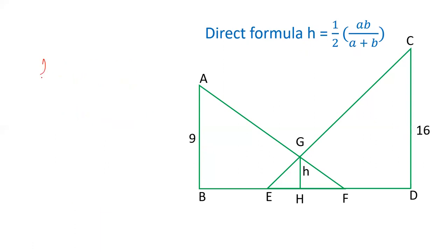One more example. H needs to be found with the same conditions: BE, EH, and FD equal, lines parallel. H value is one-half A times B upon A plus B, the formula we have written. One-half, where A is 9 and B is 16. 9 into 16 over 9 plus 16 equals 144 over 25. The answer is 72 upon 25.